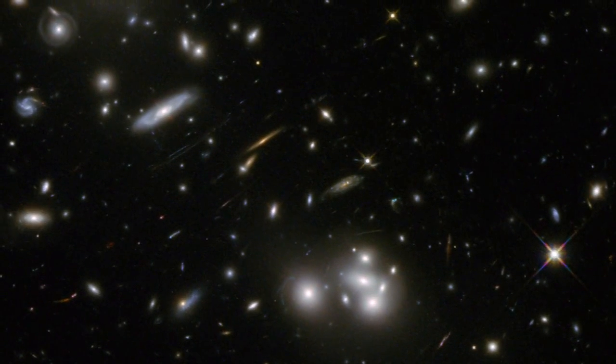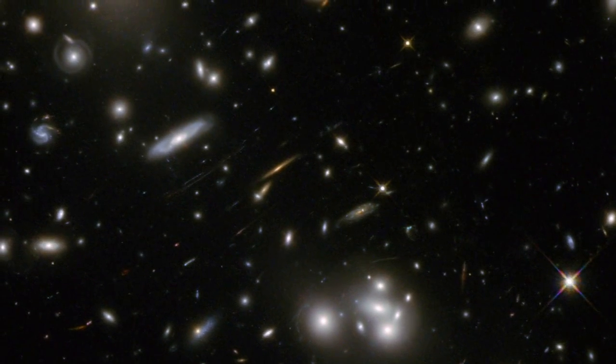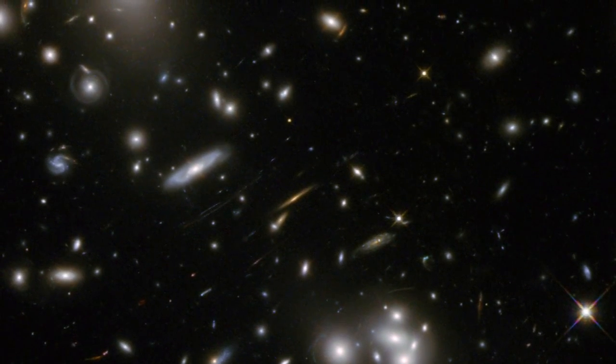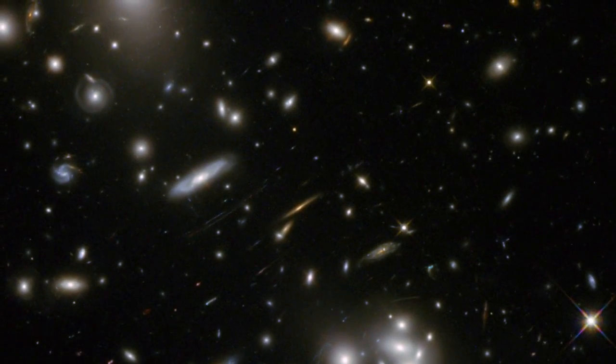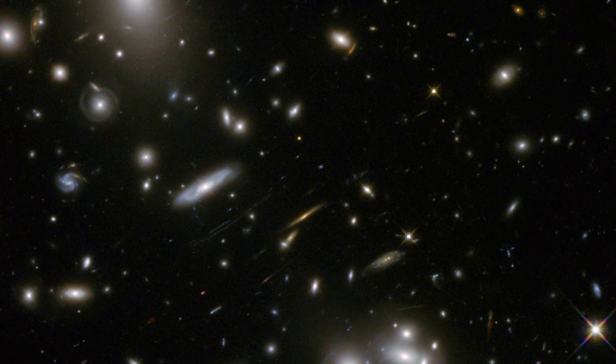Lensing can create weird and amusing shapes. Take Hubble's image of galaxy cluster Abell 68. The central part of this image is distorted and stretched out into streaks by the cluster's lensing effects.